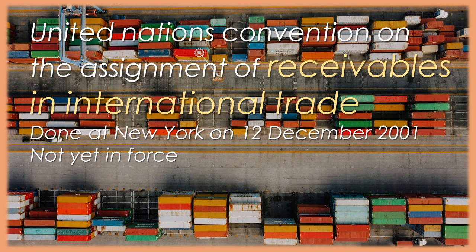Article 23. Public policy and mandatory rules. 1. The application of a provision of the law of the state in which the assigner is located may be refused only if the application of that provision is manifestly contrary to the public policy of the forum state. 2. The rules of the law of either the forum state or any other state that are mandatory irrespective of the law otherwise applicable may not prevent the application of a provision of the law of the state in which the assigner is located. 3. Notwithstanding paragraph 2 of this article, in an insolvency proceeding commenced in a state other than the state in which the assigner is located, any preferential right that arises by operation of law under the law of the forum state and is given priority over the rights of an assignee in insolvency proceedings under the law of that state may be given priority notwithstanding Article 22. A state may deposit at any time a declaration identifying any such preferential right.